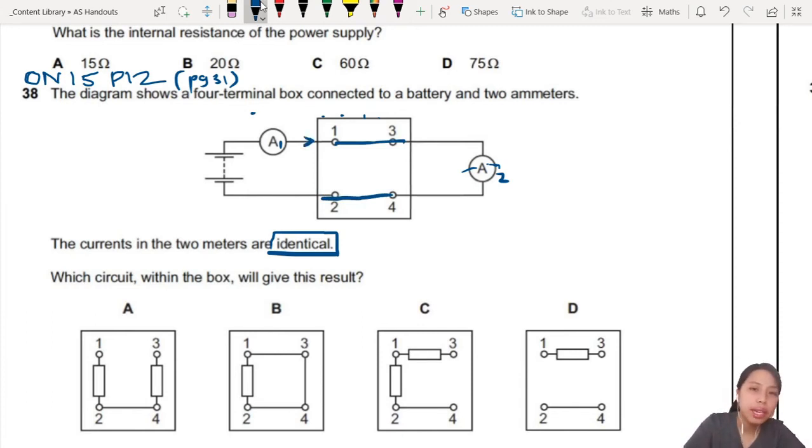If you do like that, your A2 is quite smaller because your current will split, like what we saw just now - split, split, split, split. So now if you want current to be identical, you gotta have them the same. Maybe put a resistor here or here. Then you look through, all these options will split the current.